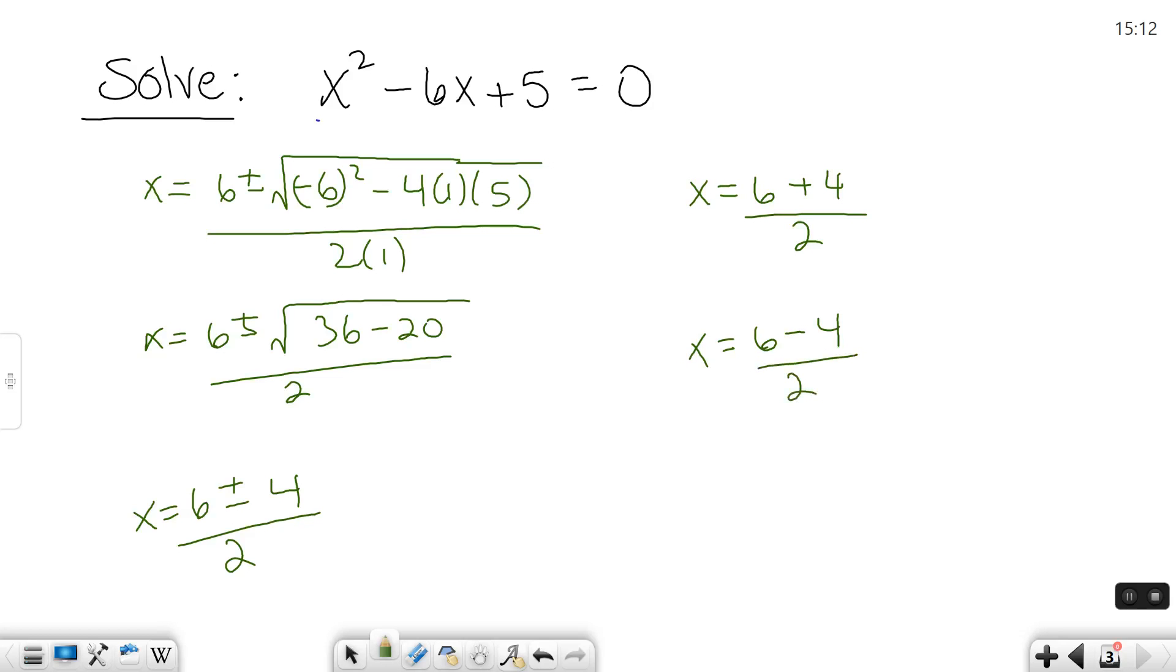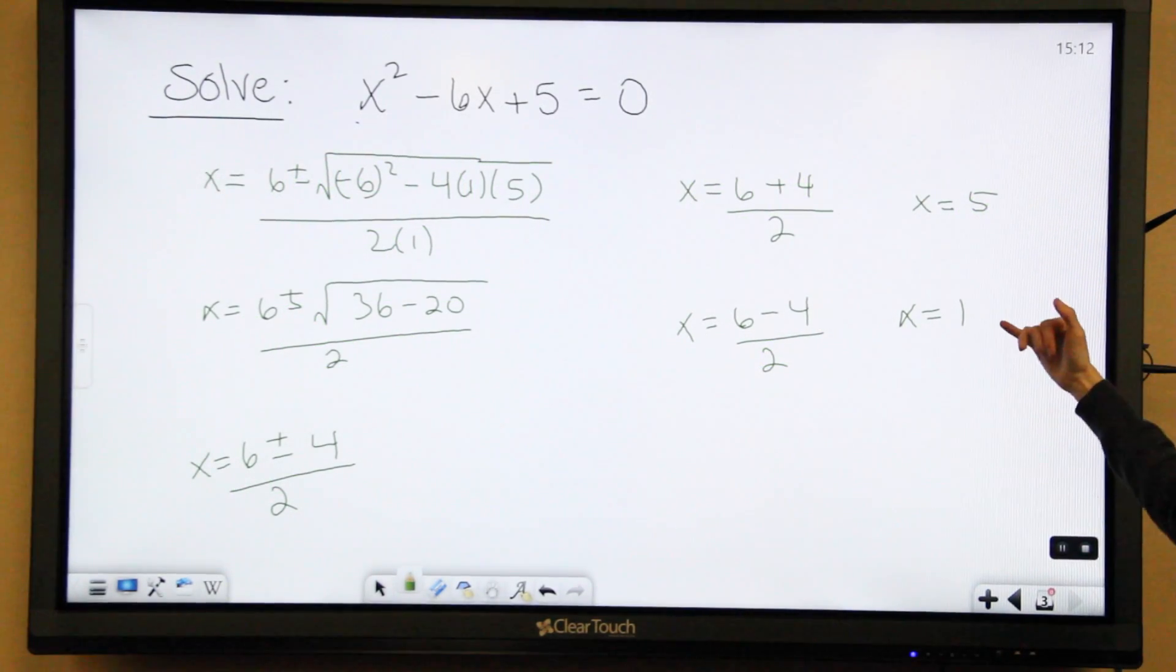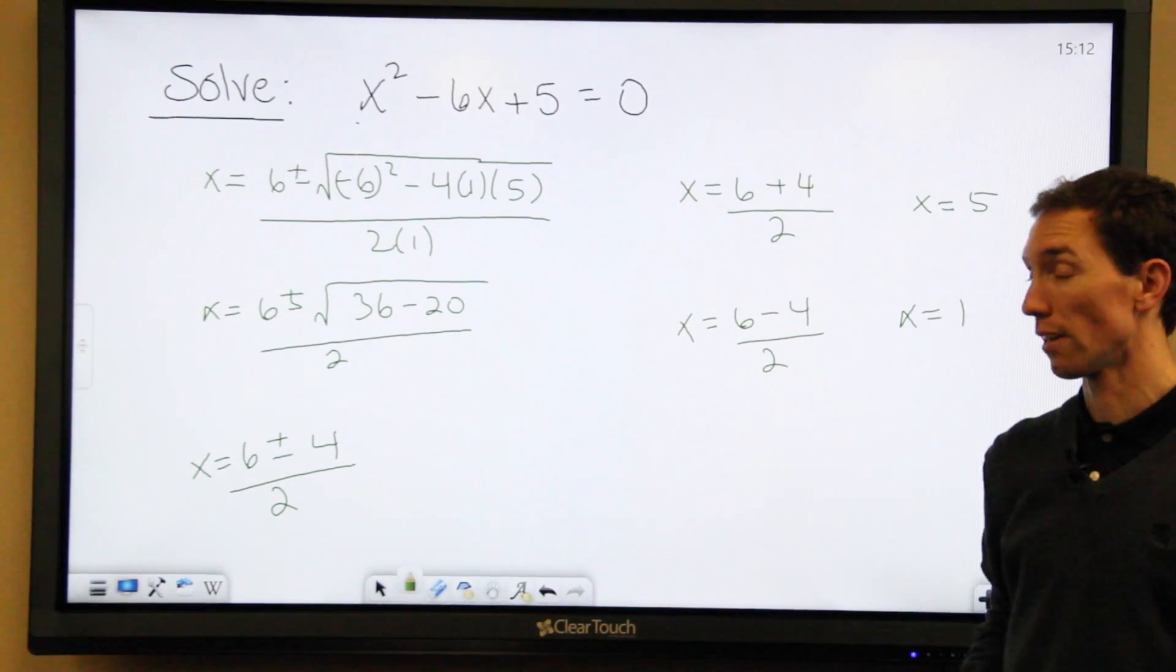Plus 4 and minus 4. And then simplify, you get your answer. 6 plus 4 is 10. 10 divided by 2 is 5. 6 minus 4 is 2, and 2 divided by 2 is 1. So these are your two solutions to this quadratic equation.